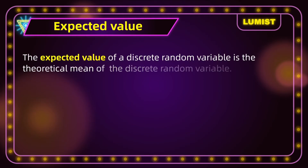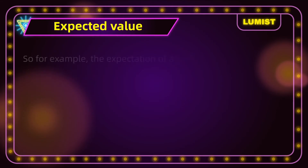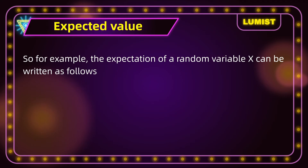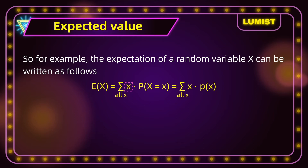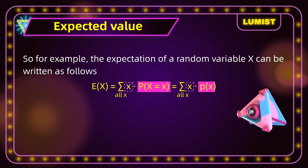The expected value of a discrete random variable is the theoretical mean of the discrete random variable. It is calculated by summing the product of all the possible values that a random variable can take and their corresponding probabilities. So the expectation of a random variable x is equal to the sum of all the possible x values that the random variable can take, multiplied by their corresponding probabilities.